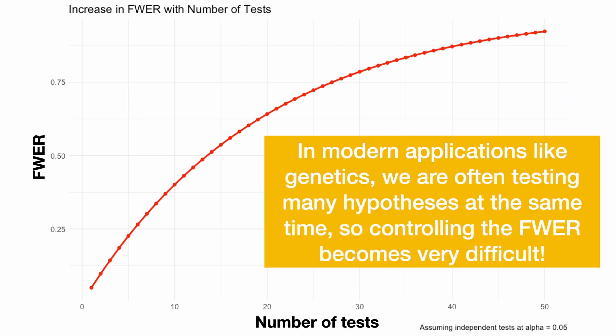And in modern applications like genetics, we are often testing many hypotheses at the same time, so controlling the family-wise error rate becomes very, very difficult.